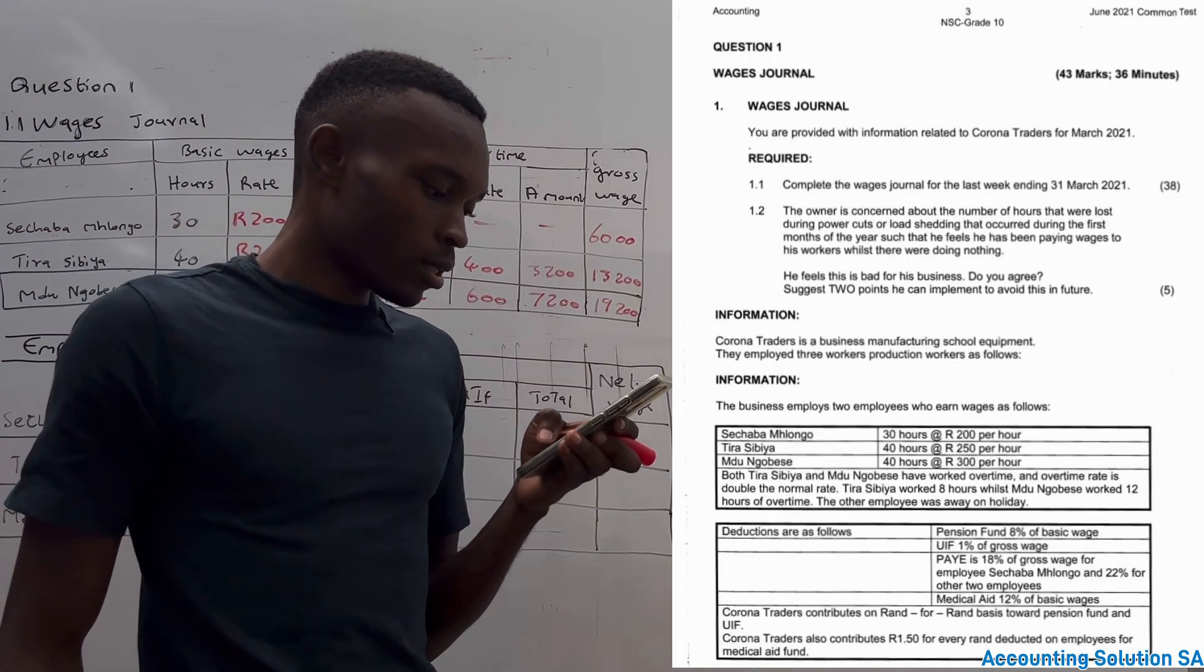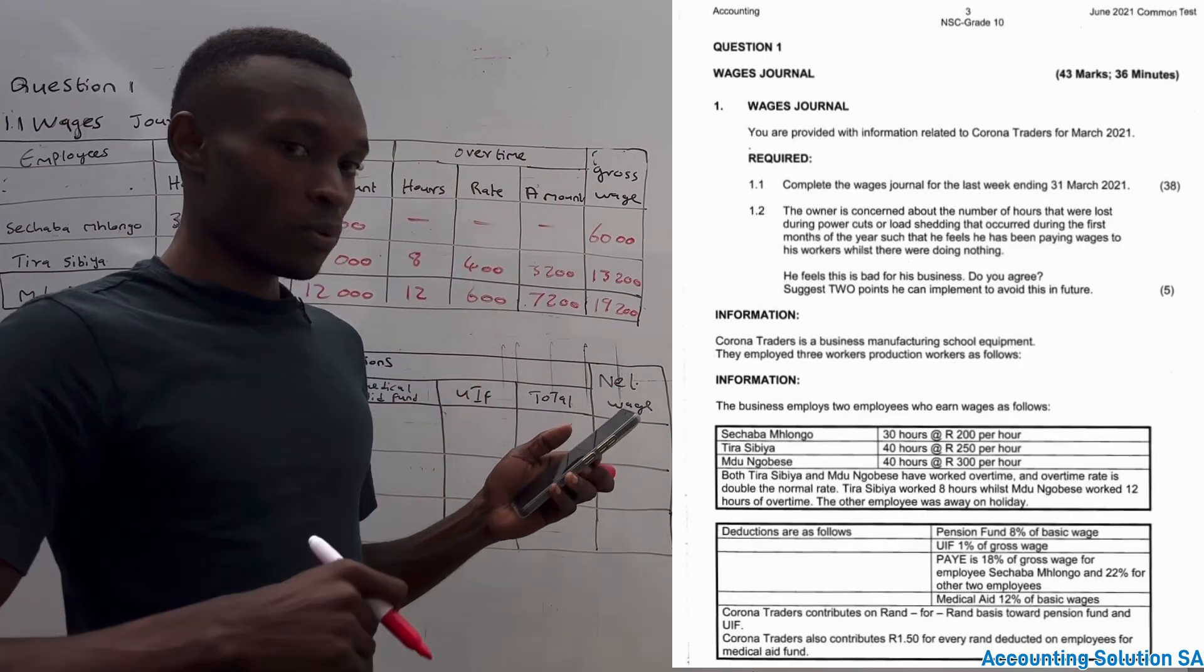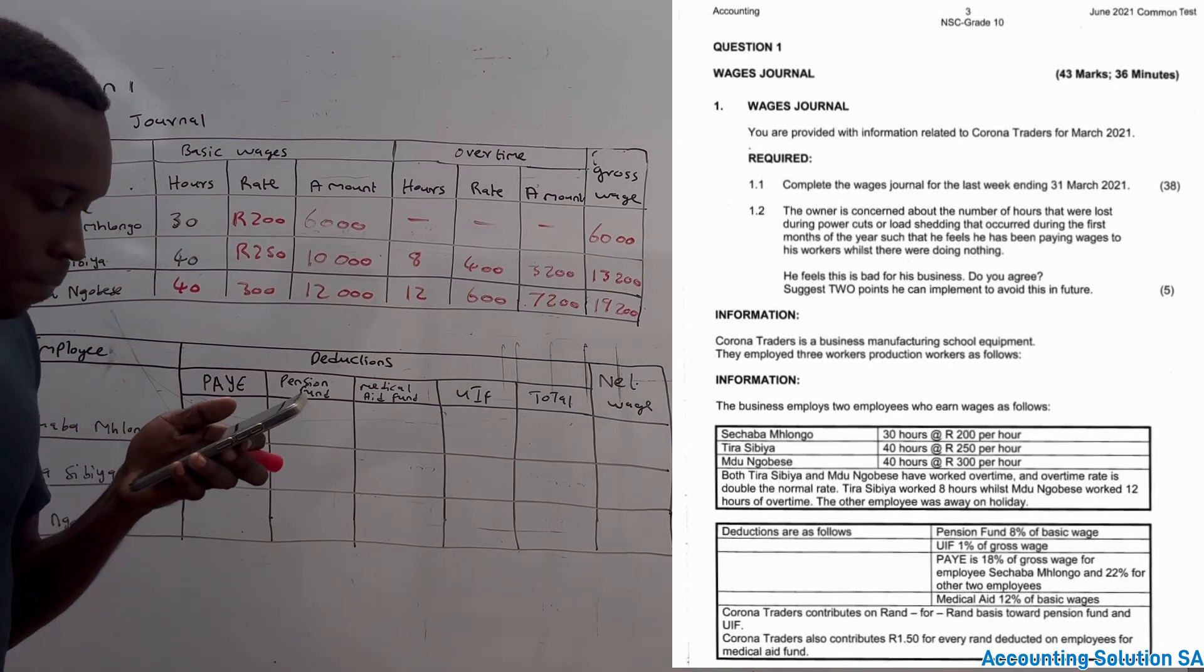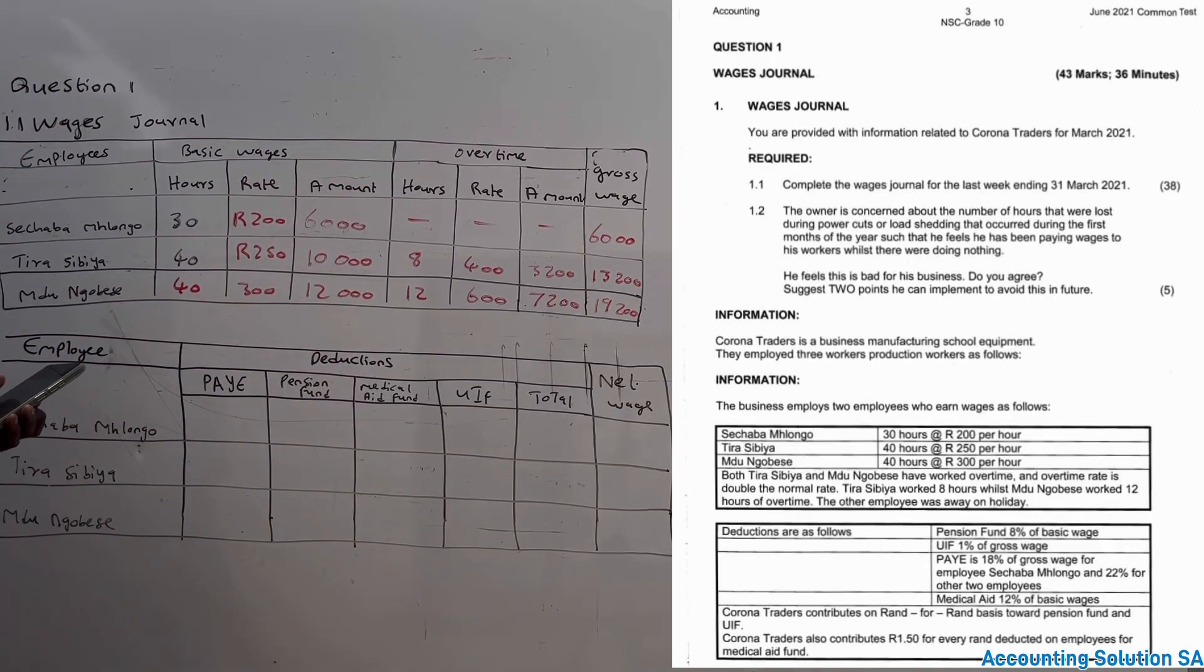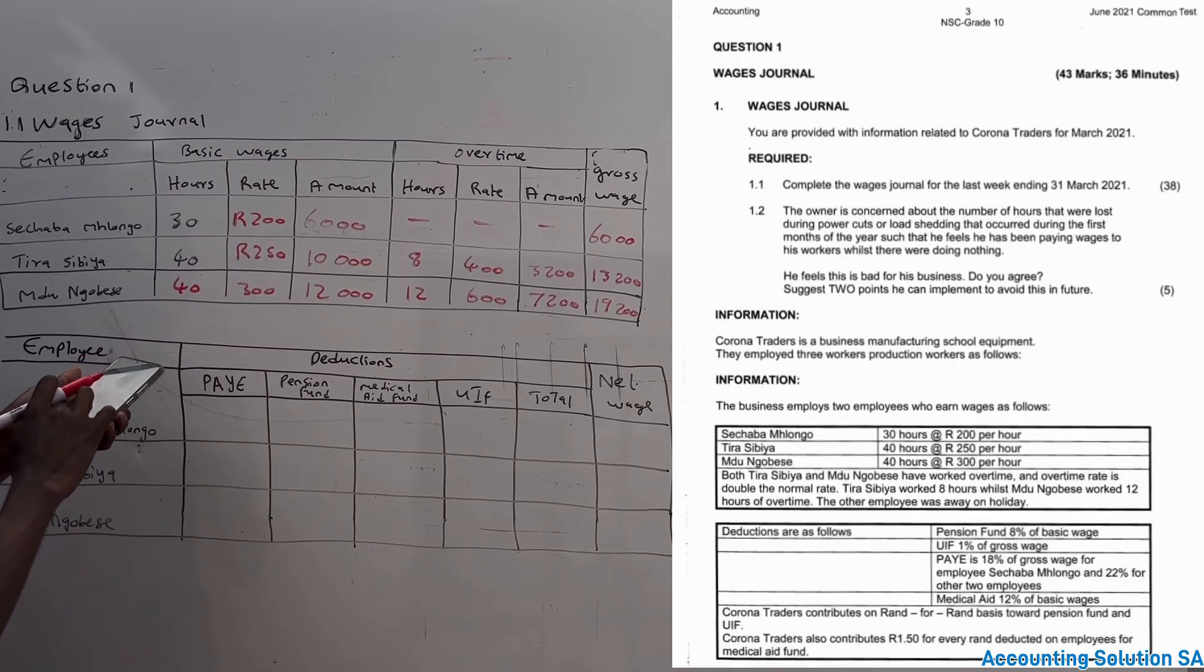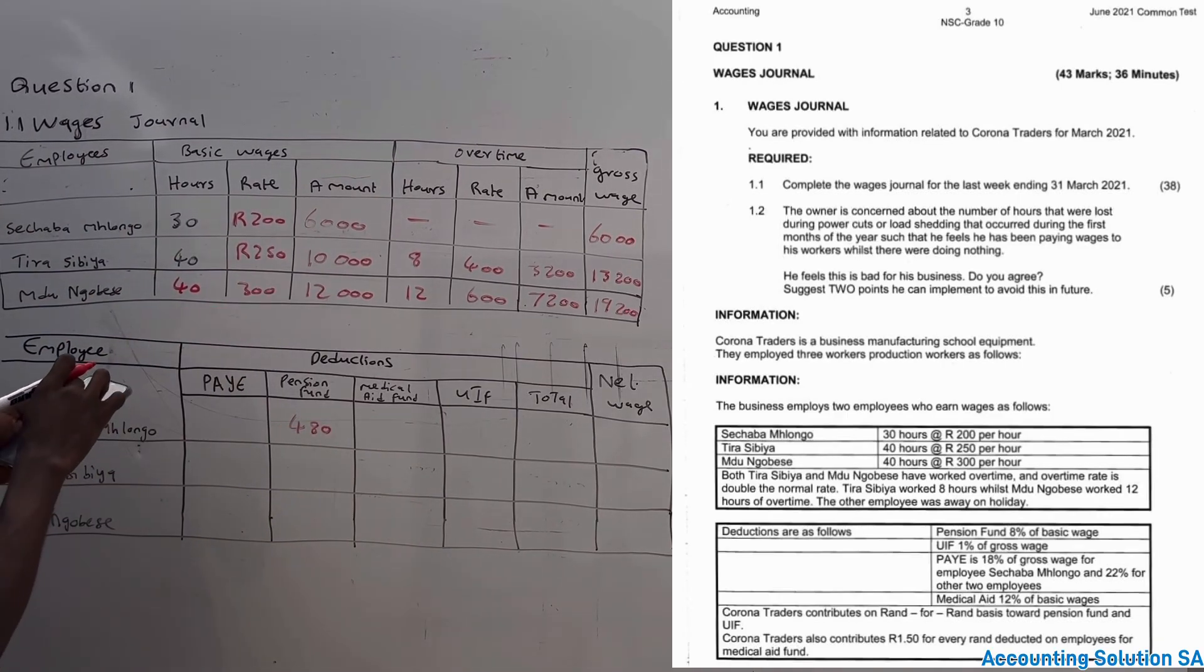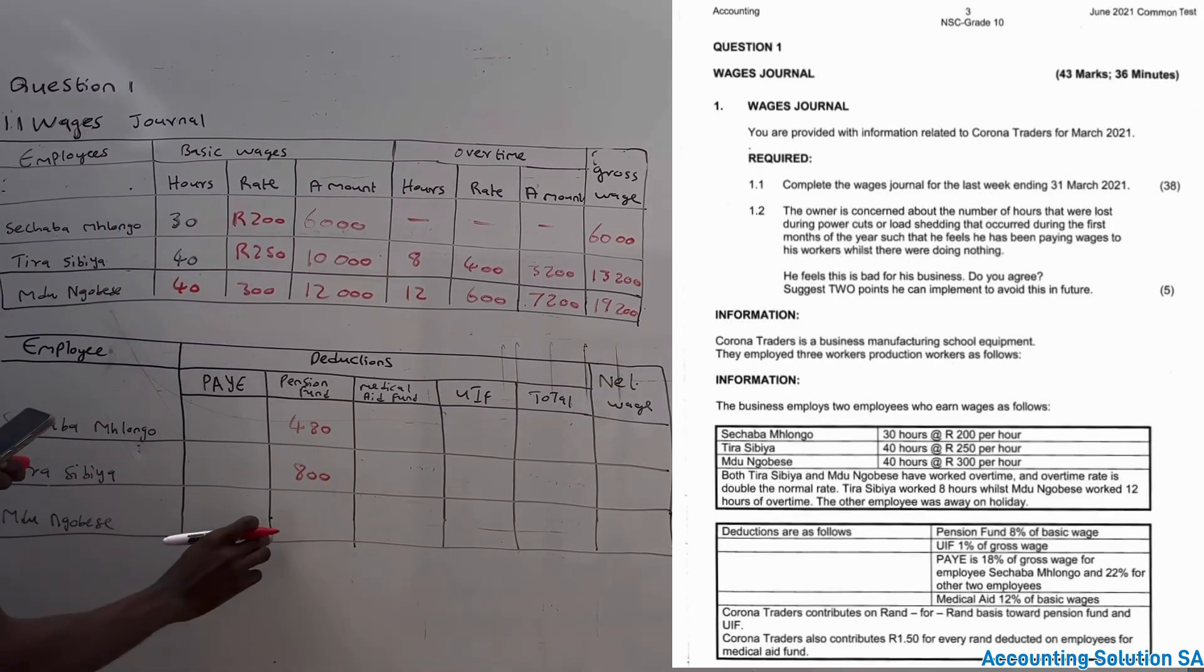Then they said the other employee was away on holiday. They mean Mshongo Misi was on holiday; he never worked anything, which means that we did it correct. Deductions are as follows. Now we're coming to this side of deduction. They say that pension fund is 8% of basic. Basic is this one. So they say that pension fund for everyone is 8% of basic wage. Pension fund is this column. Let's do calculation. We're going to say 6,000 multiplied by 8% is going to give us R480 for this one. And 10,000 multiplied by 8% is going to give us R800. And for Mdudu, 12,000 is going to give us R960.